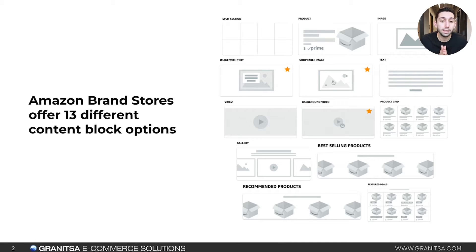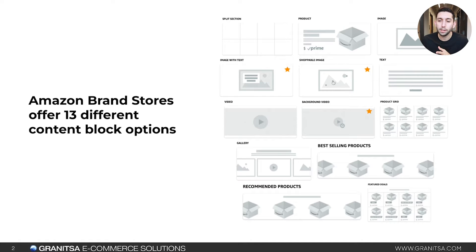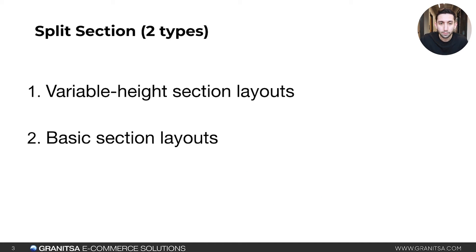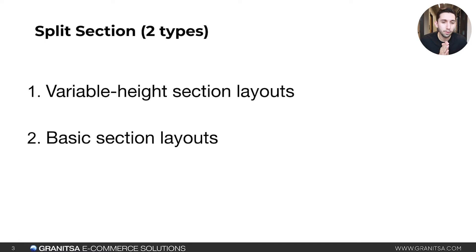There are 13 different content block options when you're creating your Amazon brand store. You can see them all right here on the right and we're going to jump into what they all mean and what they look like. Starting with the split section, this one is probably the most unique out of all of them.